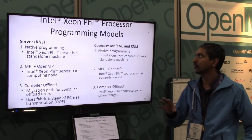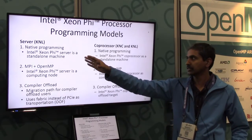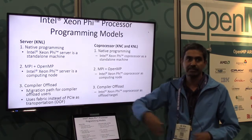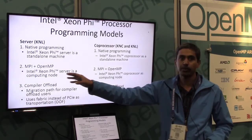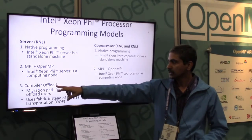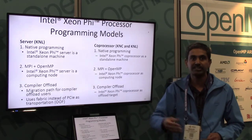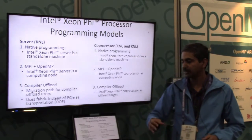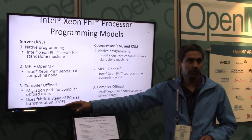This is a one-page summary of the Xeon Phi processor programming models covering both KNC and KNL. The KNL self-boot systems — what we call servers — are like a regular Xeon: you can start your program there, it's a standalone machine running Linux. You can use a bunch of KNLs with MPI and OpenMP in a cluster, then use OpenMP within a node. You can also use compiler offload with self-boot KNL systems as a migration path for existing offload programs running on KNC. This uses the fabric instead of PCI Express — what we call offload over fabric.